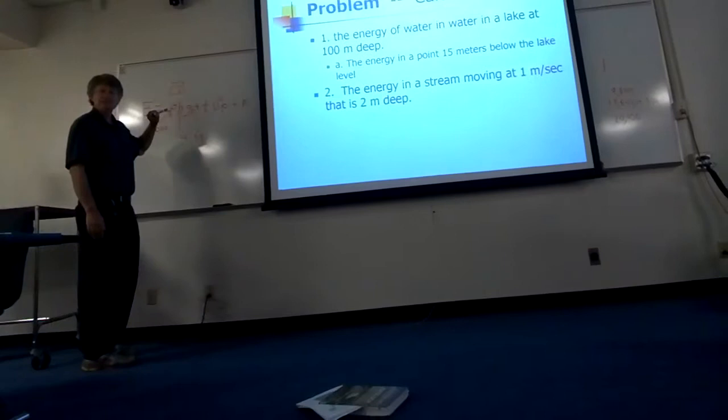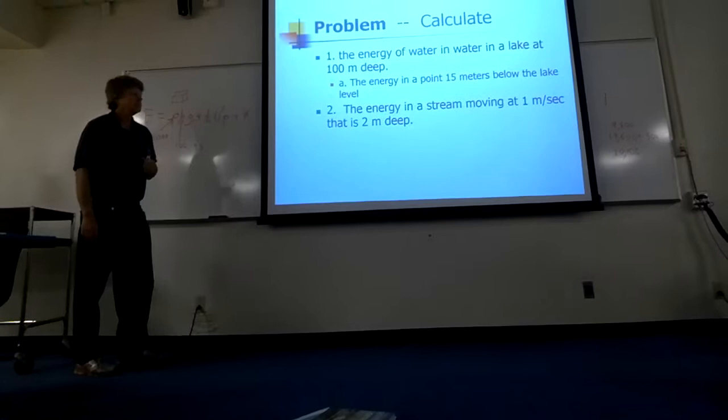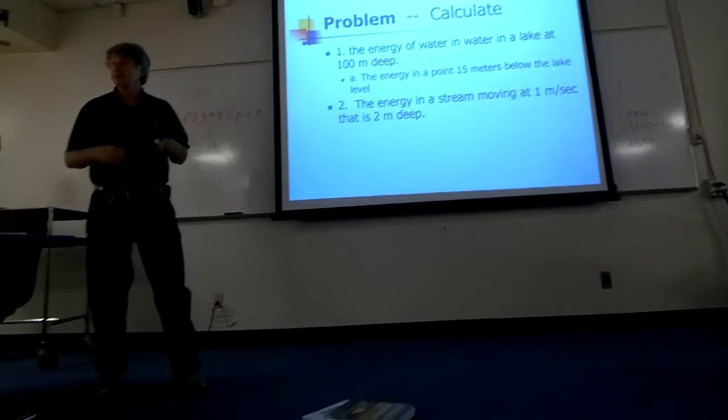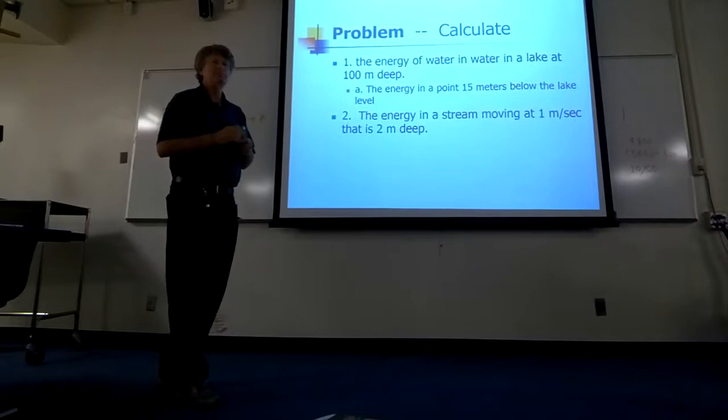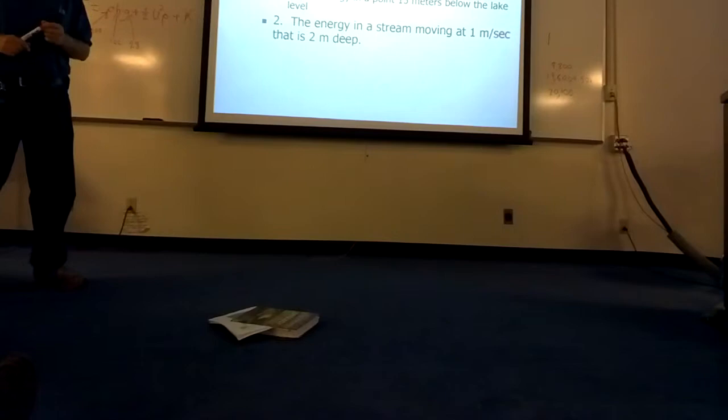1,000 times 2 times 9.8 is 19,600. And 1,000 times 1 divided by 2 is 500. So 20,000. Okay, cool. Anybody not get that? Anybody having trouble figuring it out? What are we using for units of energy again? Joules. These are all in joules. We keep life simple. Kilograms, meters, seconds, joules, newtons, pascals.